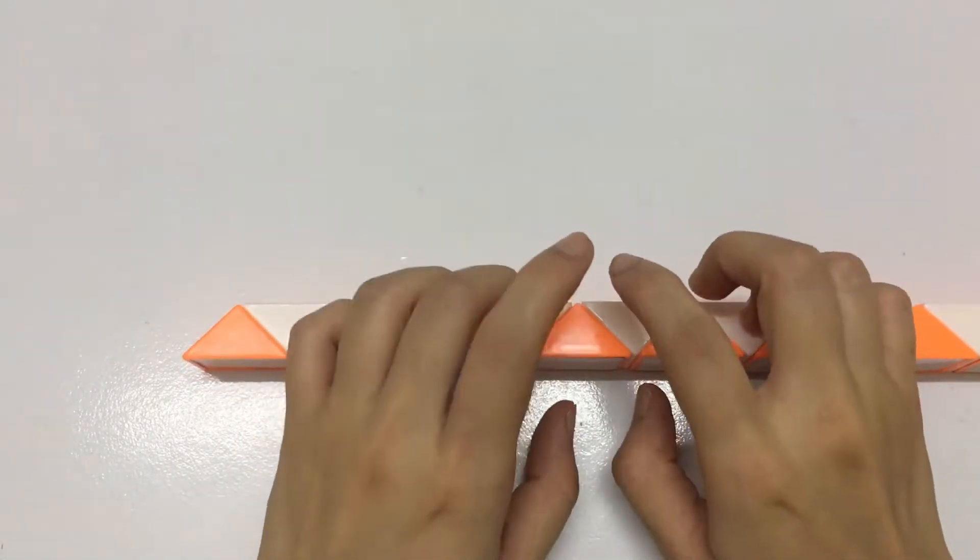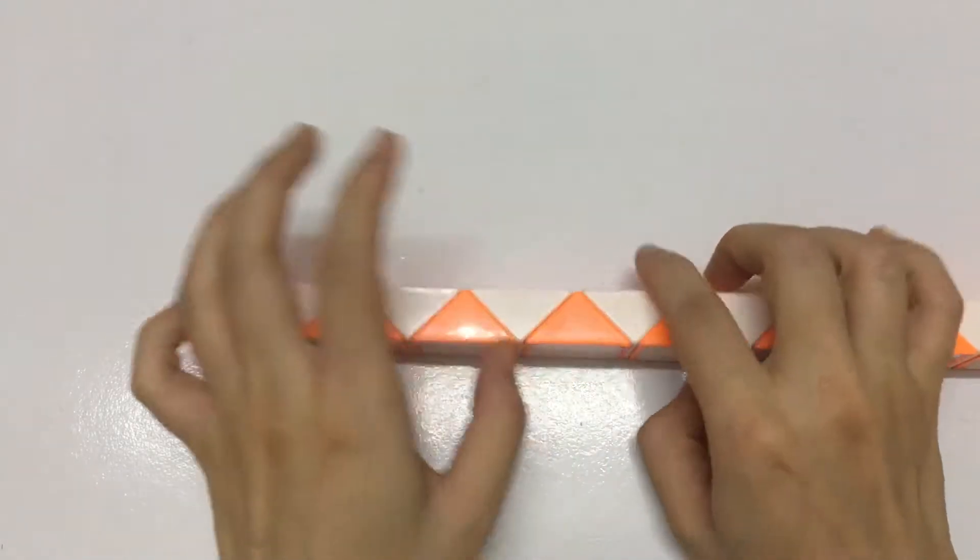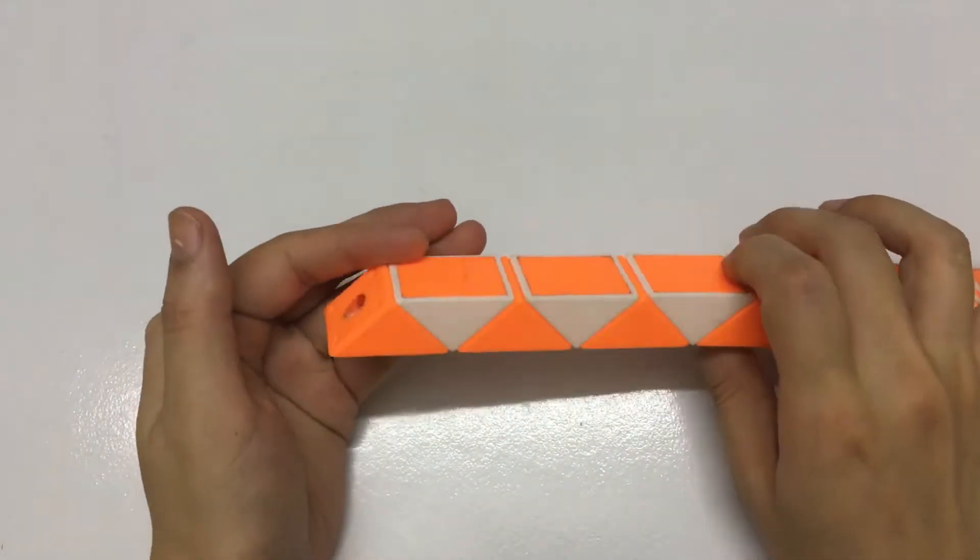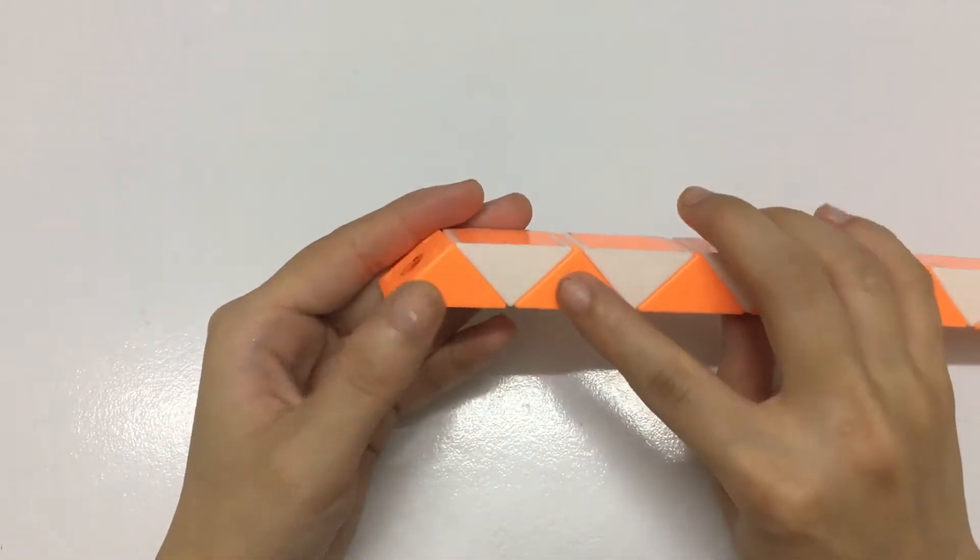Today we will make a big fish with Rubik's neck 48 pieces. Now we start with 1, 2, 3, cut down.